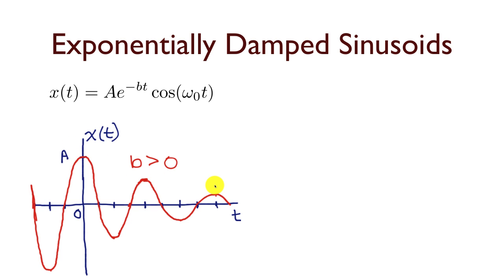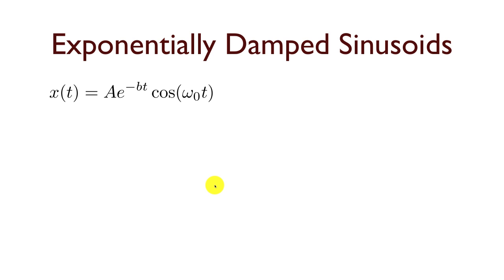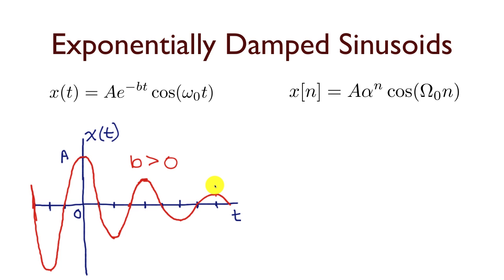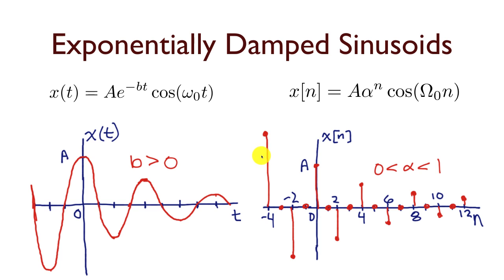We get the same sort of thing if we go to the discrete time case, where I'm going to write it as A alpha raised to the nth power times cosine of omega naught n. Again, we get the oscillatory behavior associated with a cosine in this case, although it has an envelope or a damping factor that looks like an exponential. And of course, you can get variations on this. We can use a sine function instead of a cosine. We can consider alpha greater than 1 or b less than 0 to get growing damped sinusoids.